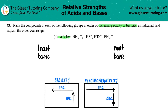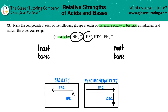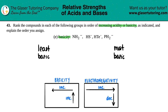The first thing is we have to figure out why we can use this trend. We can use this trend because all of these are coming from binary acids. With binary acids, binary is when you only have two elements in one molecule — you have an H and then a random element. There's no oxygens here. These are binary acids.